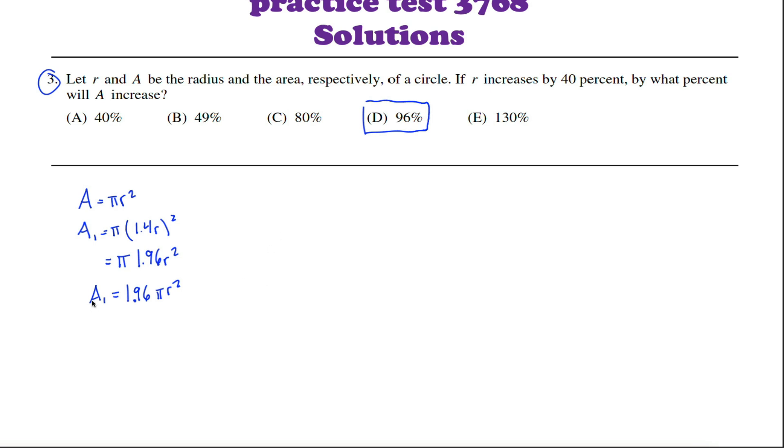If you have a hard time just seeing that, the way you could find out the percentage by which the area increased is take the new area and divide it by the old area. So the new area is 1.96 pi R squared. The old area is pi R squared. If I simplify, the pi's cancel out and the R squareds cancel out. So I get 1.96.